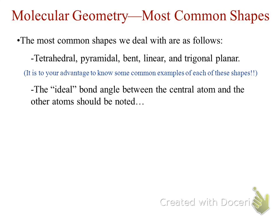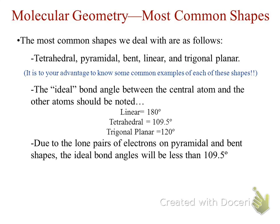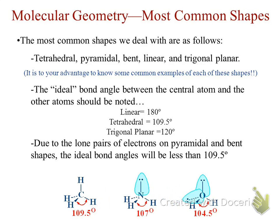The ideal angle between the central atom and other atoms should be noted — for each geometry there will be a deviation, but there is an ideal bond angle. For linear, it's going to be 180 degrees. Tetrahedral is going to be 109.5 degrees. Trigonal planar is 120 degrees. Those are the main ones we're going to deal with. Due to lone pairs of electrons on pyramidal and bent shapes, the ideal bond angle will usually be less than 109.5 degrees.